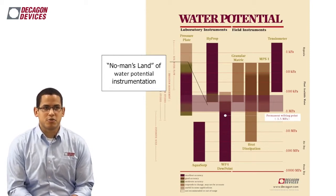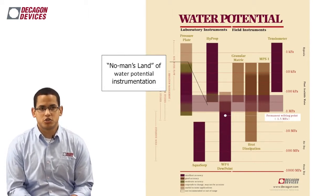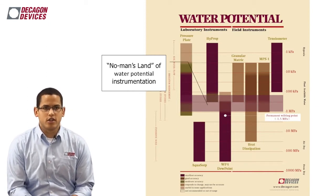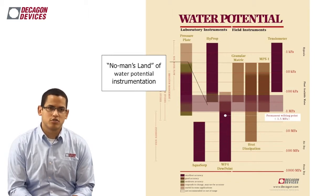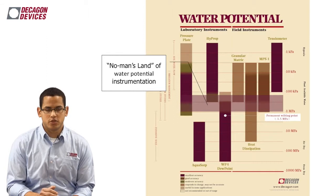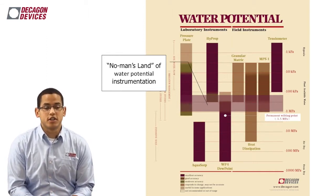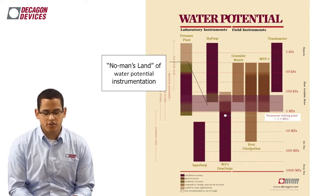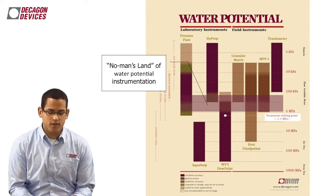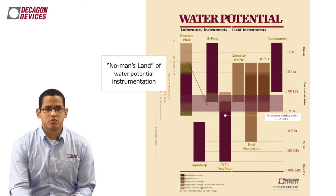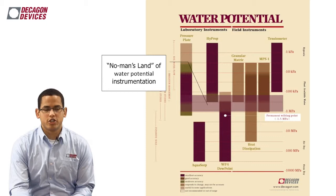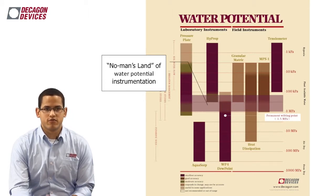Before discussing the instruments, I want to talk about what we call the no man's land of water potential instrumentation — the grayed-out area between about 150 to 200 kPa and negative 1 megapascal. In the past, we had real issues getting good measures within this range. It is an important range within the moisture characteristic curve, and it was imperative to find instrumentation that can help us cover the full range. We've made strides to close that gap.